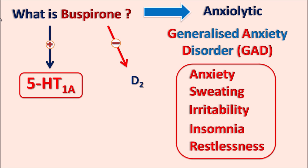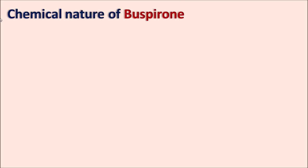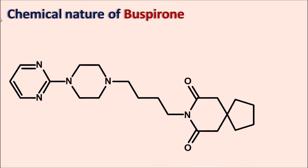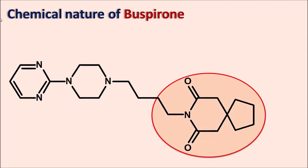Now let us look at the chemical nature of buspirone. This is the structure of buspirone — it has a large structure. Here we can observe a spiro compound. The spiro ring is a ring attached by a single common carbon, and here we can observe the spiro ring system.